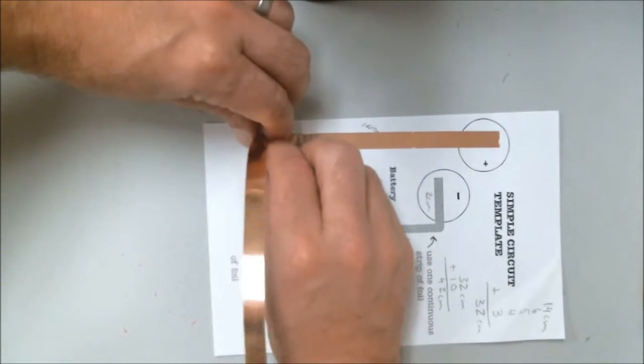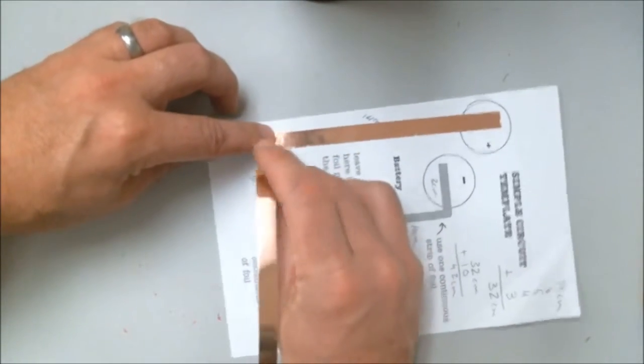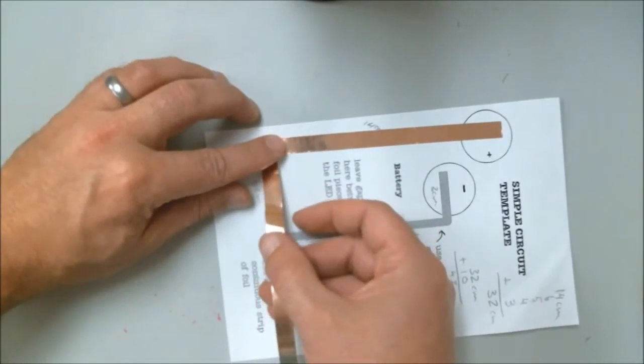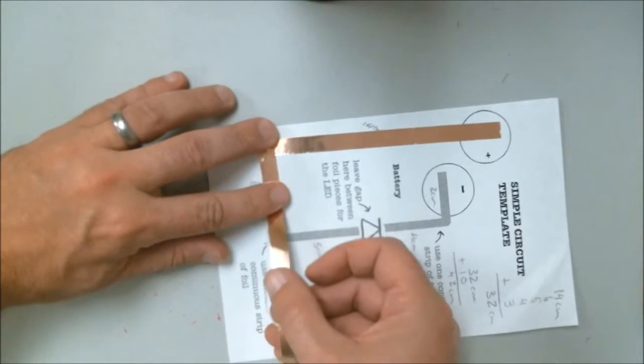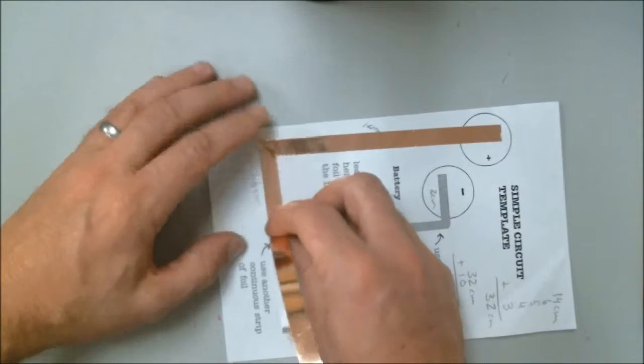I'm going to hold this on the sides and pull the paper out from underneath, then just press that down. Again, just pull and stick till my next corner.